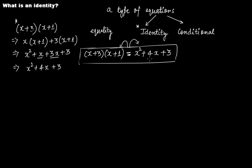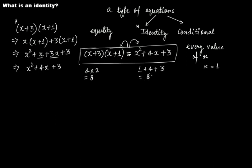This equation is true for all values of x — for every value of x, there is no exception whatsoever. If you put 1 here, you get (1 + 3)(1 + 1) = 4 × 2 = 8, and on the right side 1 + 4 + 3 = 8. If you put 5, you get 8 × 6 = 48, and 25 + 20 + 3 = 48. You can check for other values of x — no matter what value you put in, LHS equals RHS for every value of x.